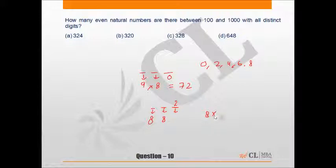So in that case, the total number of numbers will be 8 into 8, 64. And there will be such four cases as 4, 6, and 8 can also be placed at the unit place. So the total number of numbers in the second case will be 64 into 4, that is 256. Hence, the required number will be 72 plus 256. This comes out to be 328. Therefore, option C is the correct answer.